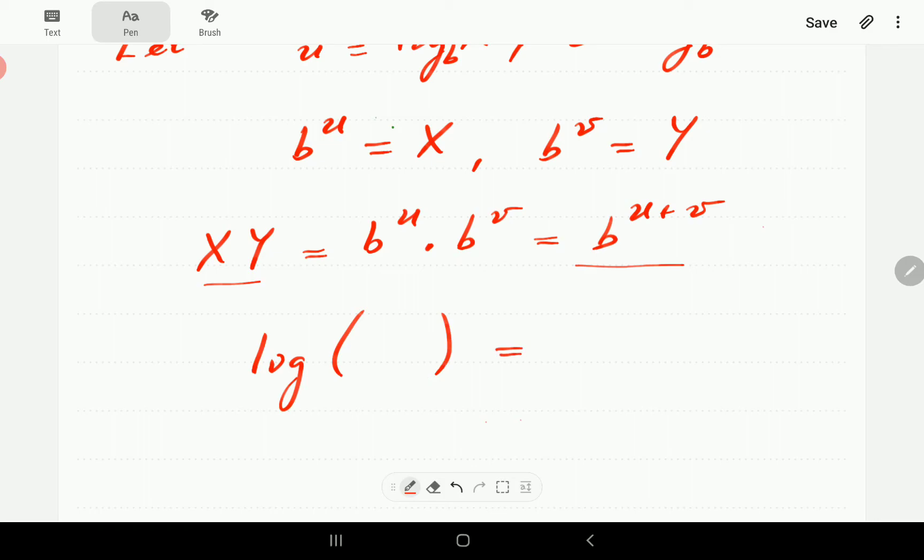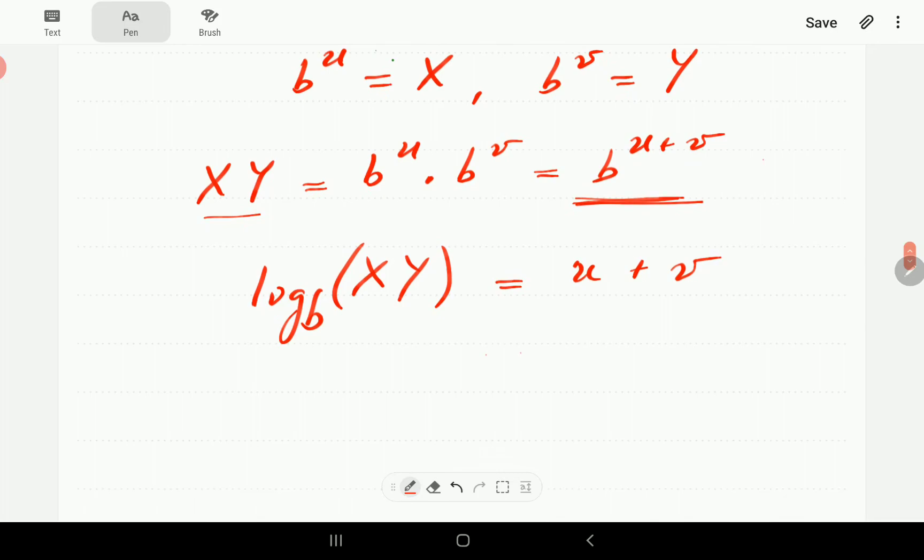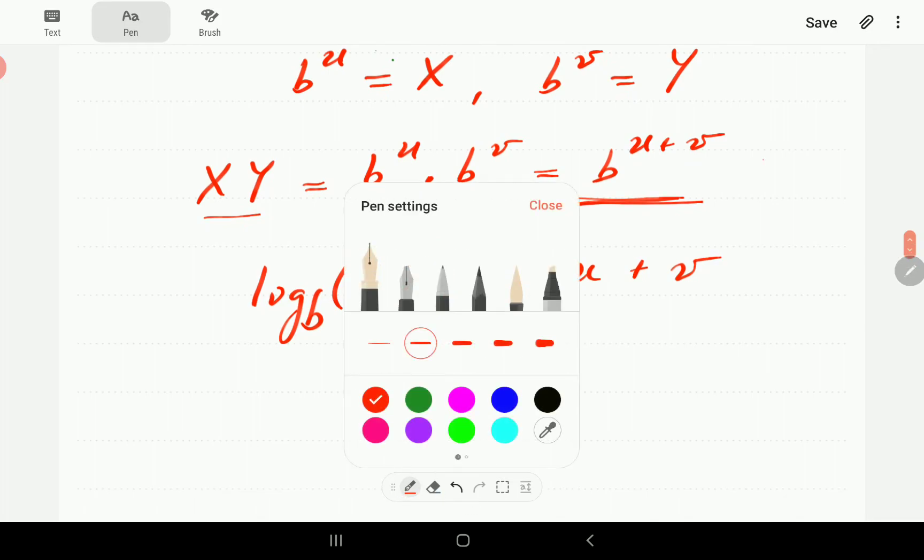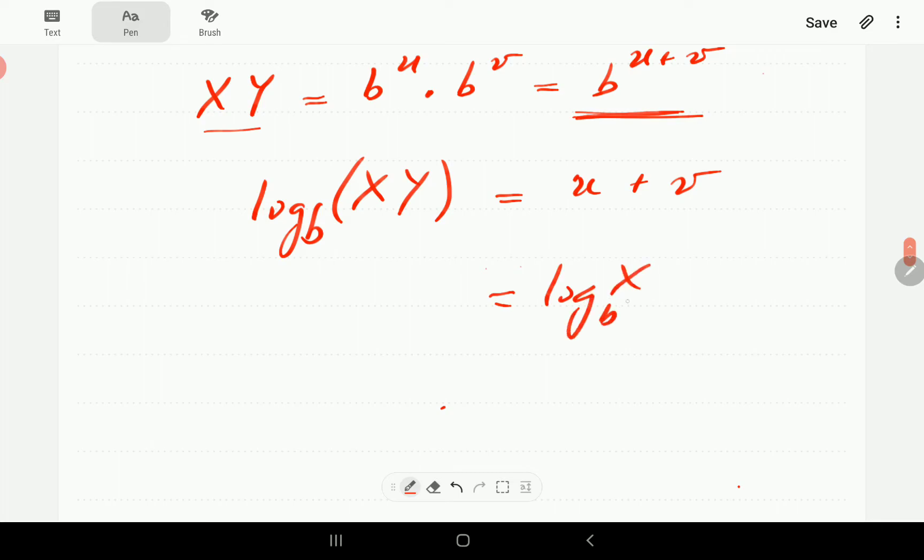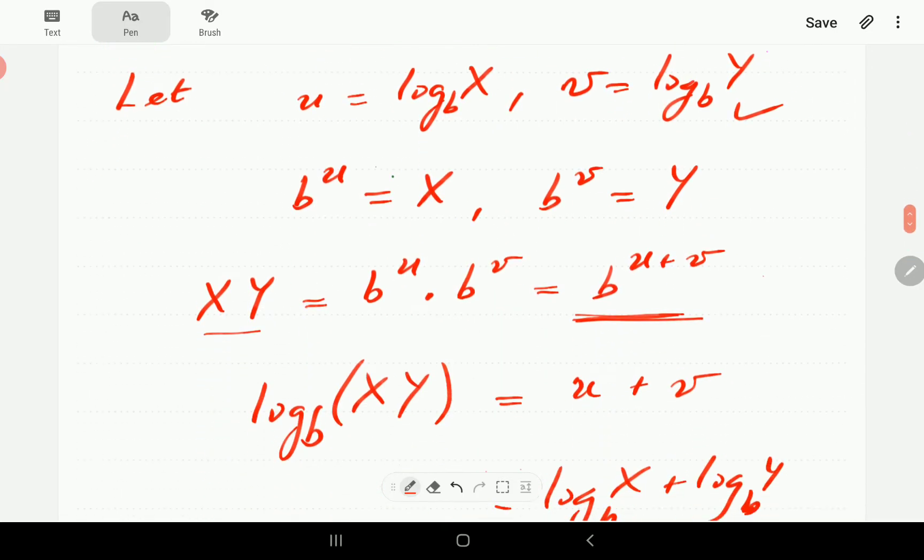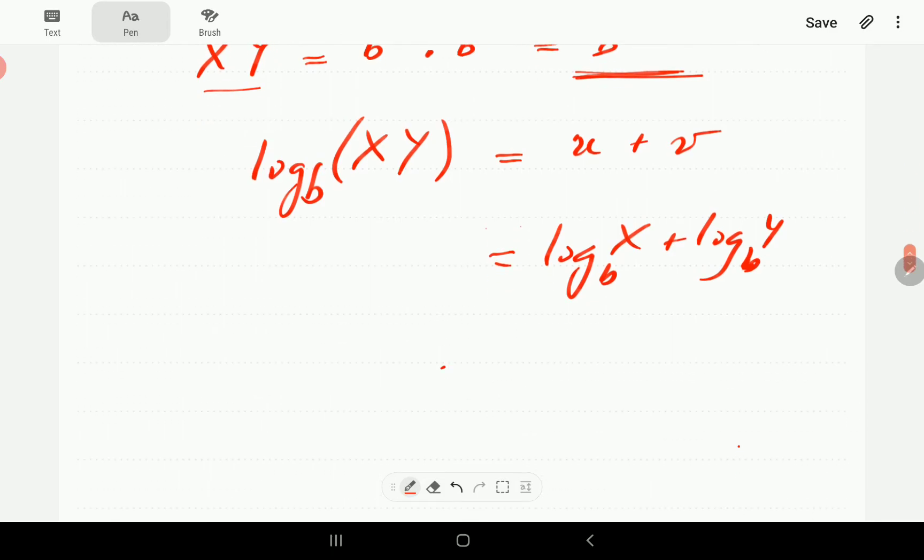And then if we rewrite this now in log form, okay, it's going to be log of—now remember the log is always the power. So the power here is u plus v, the base is b, so that is going to go there, and then xy goes there. So xy equals to b to the power u plus v. If you write it in log form, the same as log xy is equal to u plus v. However, u is log x and v is log y from where we started, and so this is now the same as the first property.